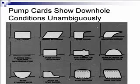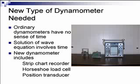This card backs up, whereas that one goes forward — that's a dead giveaway that you've got a lot of rod-tubing drag from a deviated well or crooked hole, something like that. So anyhow, we needed a new dynamometer.